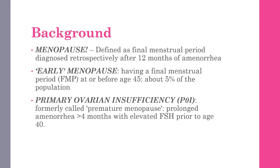Starting with the background. Usually we come across three diagnoses where you have to think about giving the patient hormone replacement. Menopause is defined as the final menstrual period, diagnosed retrospectively after 12 months of amenorrhea. It is basically a retrospective diagnosis where the lady has not had a single period for the last one year, and usually this happens around 50 years of age in most populations.